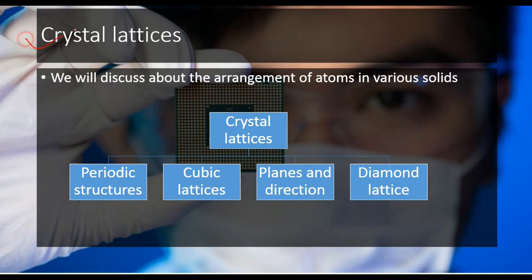We can differentiate the crystal lattices among four subtopics. First, we will study periodic structures, then cubic lattices, then planes and direction, and lastly the diamond lattice.